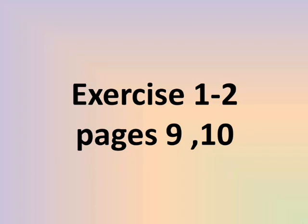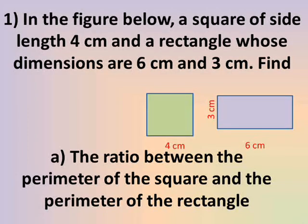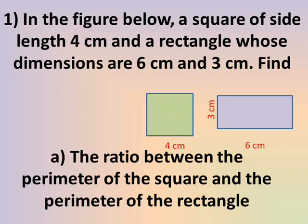Exercise 1, 2, pages 9 and 10. Number 1: In the figure below, a square of side length 4 cm and a rectangle whose dimensions are 6 cm and 3 cm. Find number A.